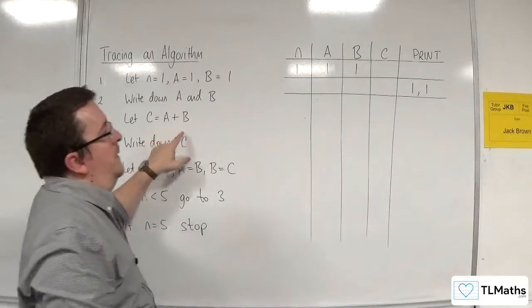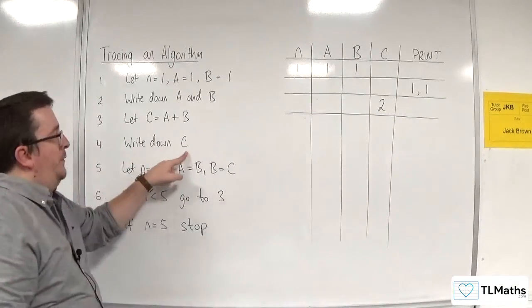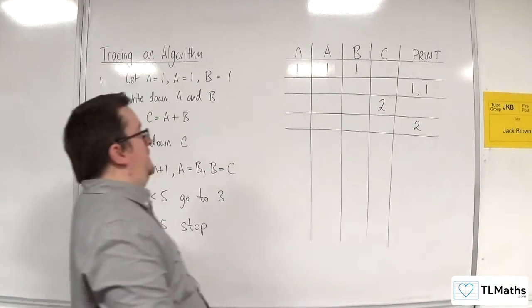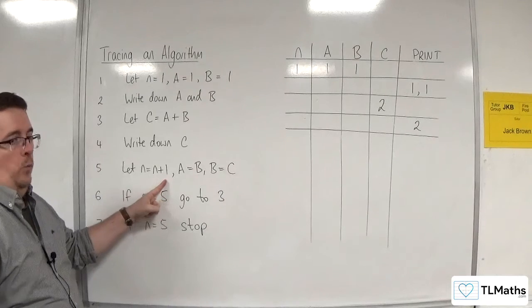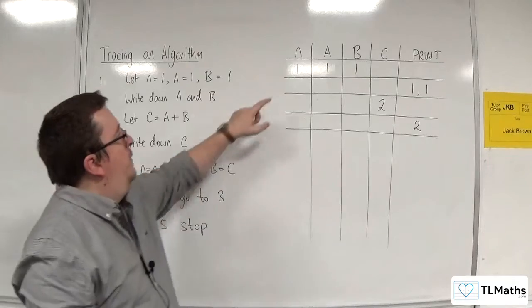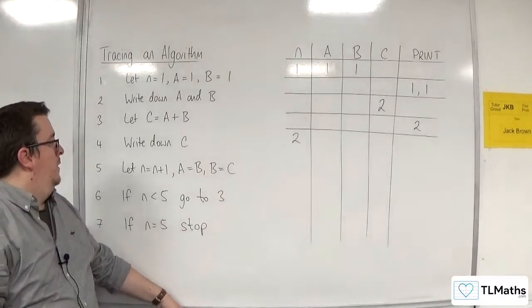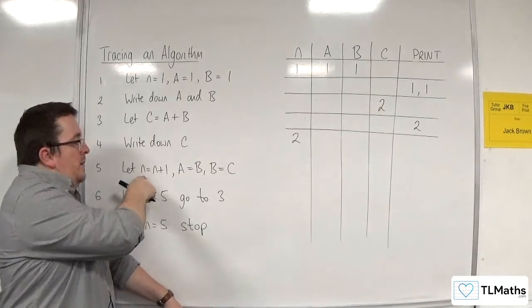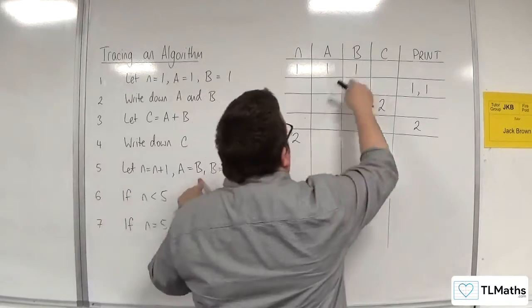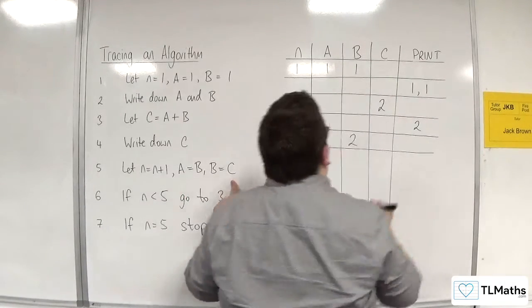All right, so let C be equal to A plus B. So, A is one, B is one, so C is now two. Write down C. All right, so that's in our print. So, two goes there. Let N be equal to N plus one. A equals B, B equals C. So, if N is equal to N plus one, we take the N that's there, we add one to it, and N is now two. So, this is effectively saying, let the new N be the old N plus one. A now becomes B, so one, and B becomes C, two. So we draw a line underneath that.